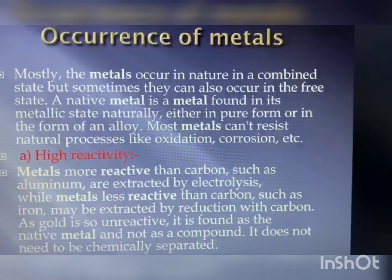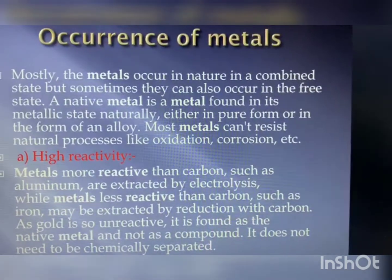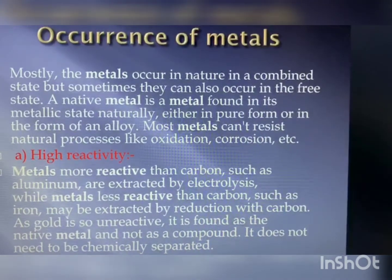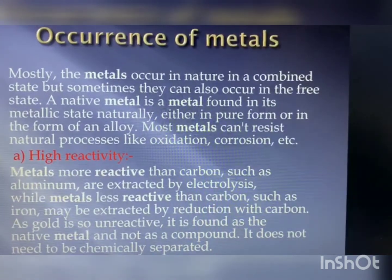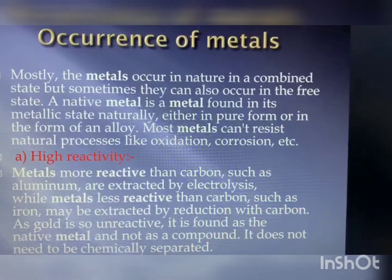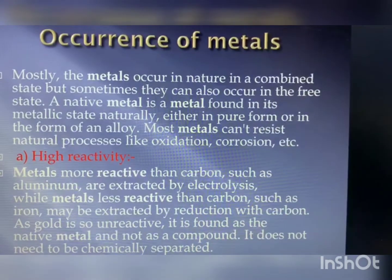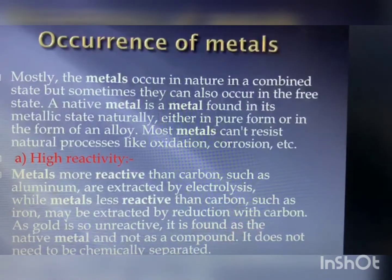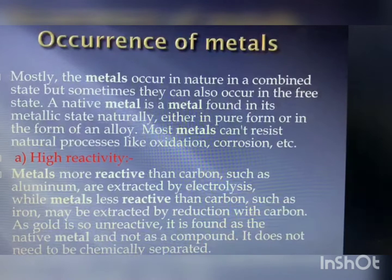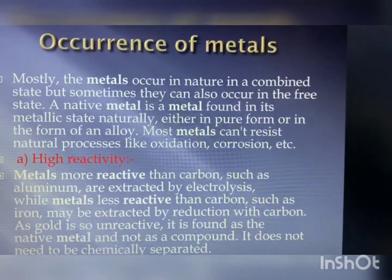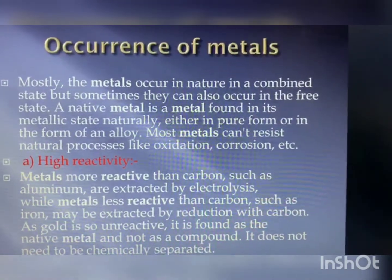Metals in the middle of the activity series — for example zinc, iron, lead — are moderately reactive and are found in the earth's crust mainly as oxides, sulfides, or carbonates. Oxygen is a very reactive and abundant element, which is why many metal ores are oxides. Based on reactivity, metals are categorized into three groups: metals of low reactivity, metals of medium reactivity, and metals of high reactivity. Different techniques are used for extracting metals from each category.